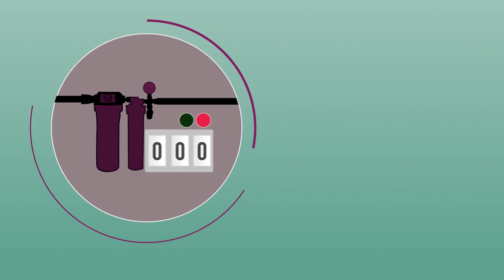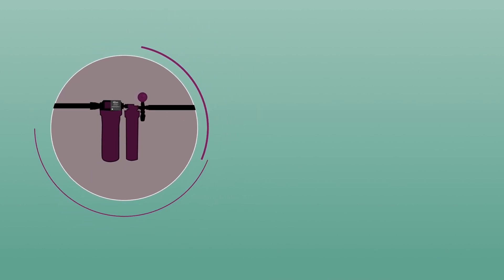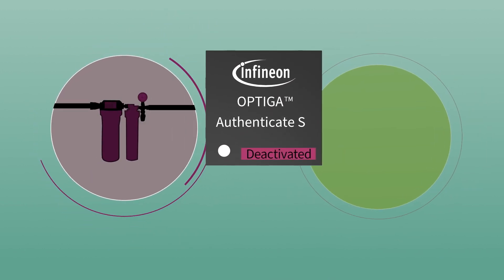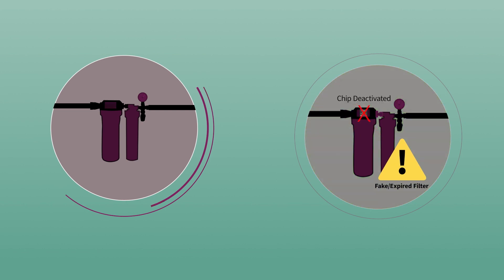If the secured counters trigger the end-of-life function, Optiga Authenticate S can deactivate selected functions to prevent danger from continued use of the spare part with an original or cloned product.